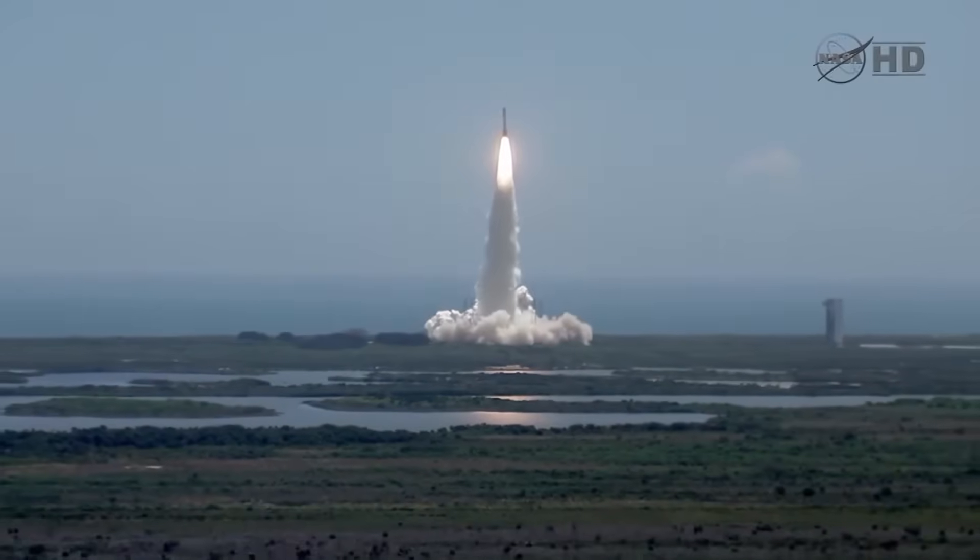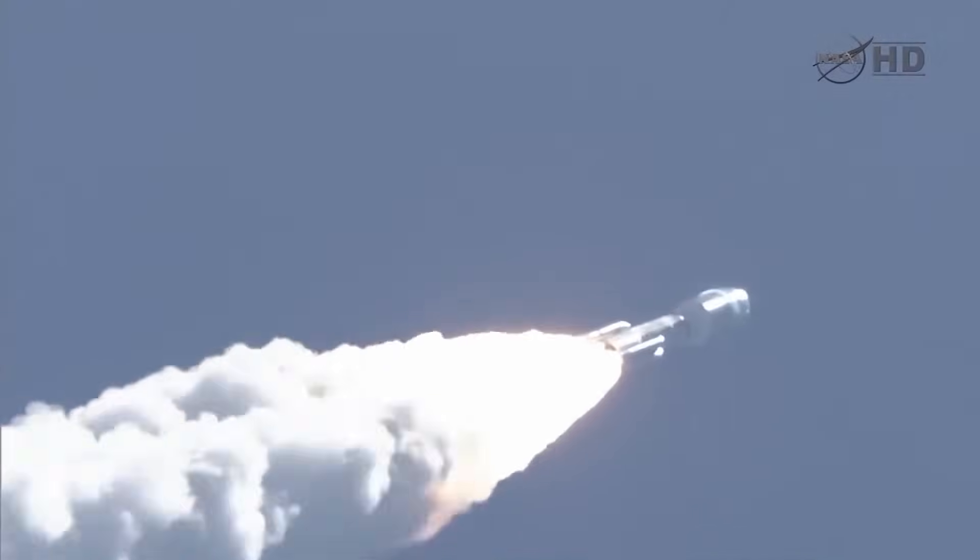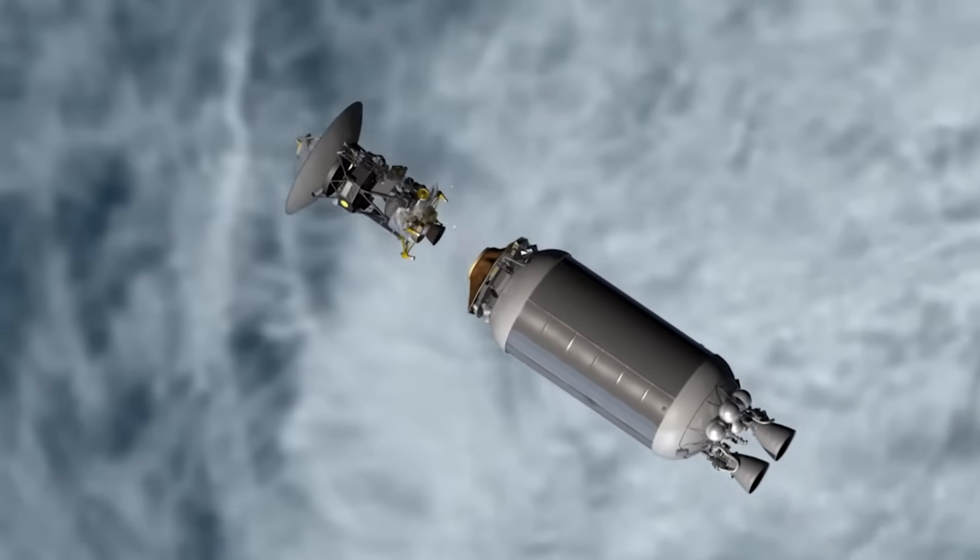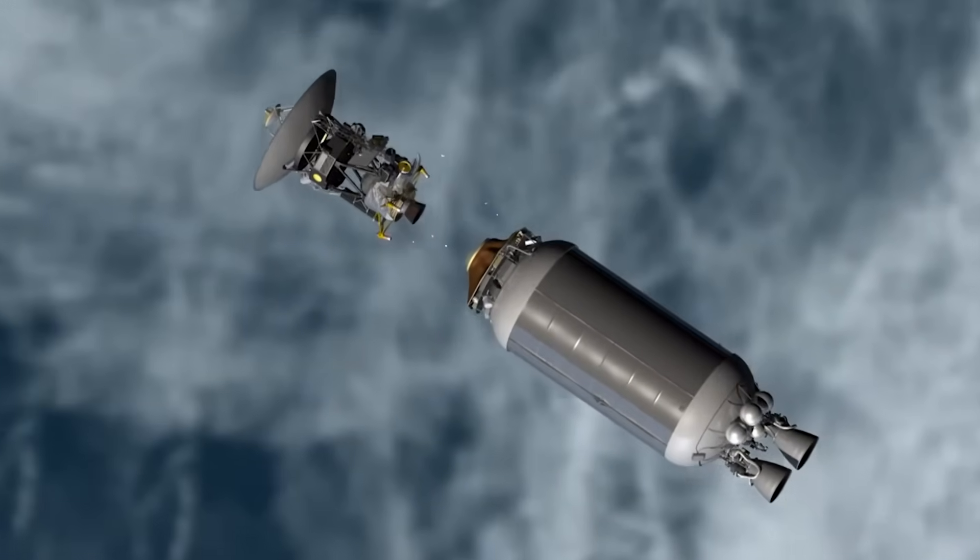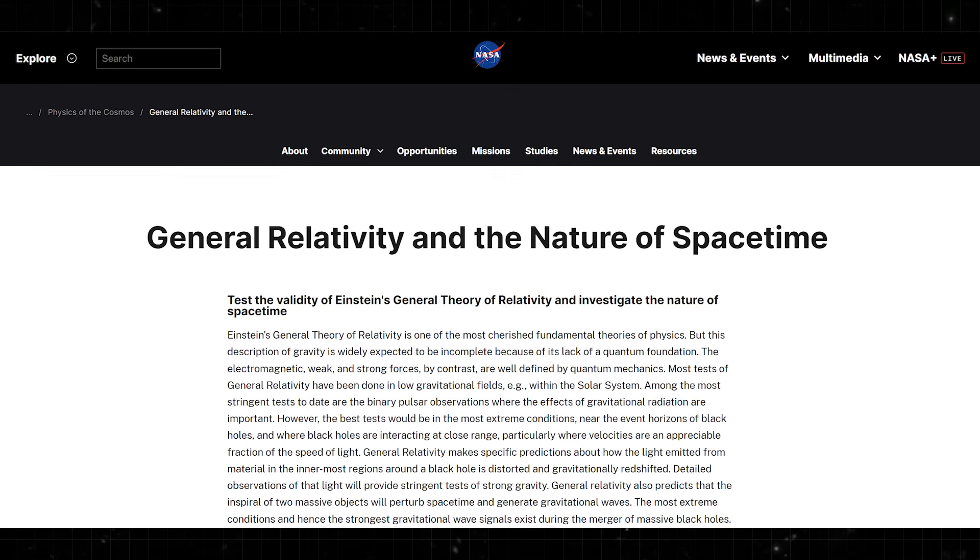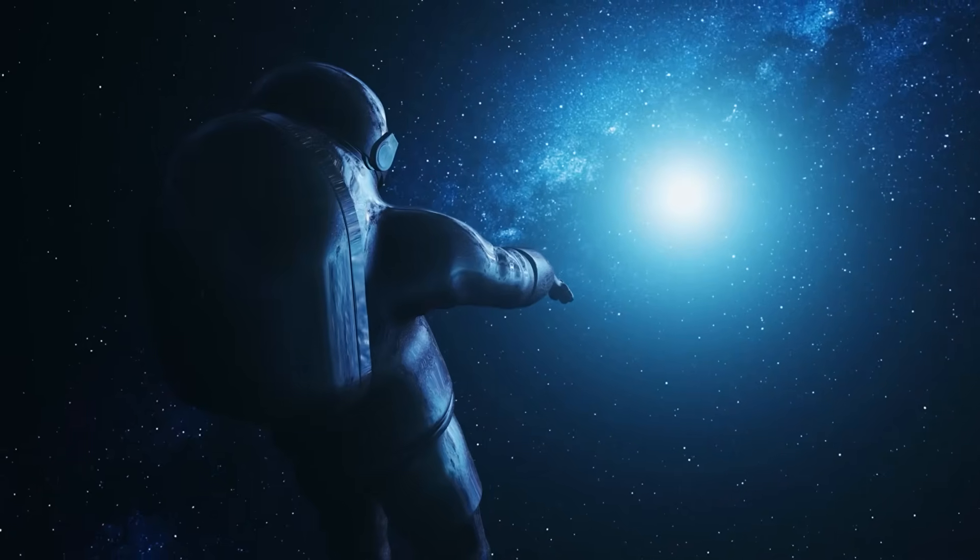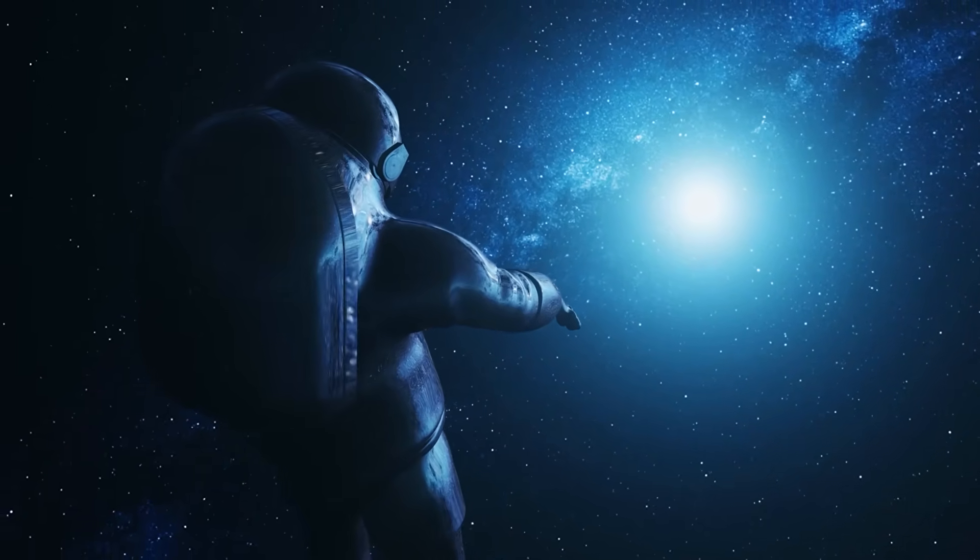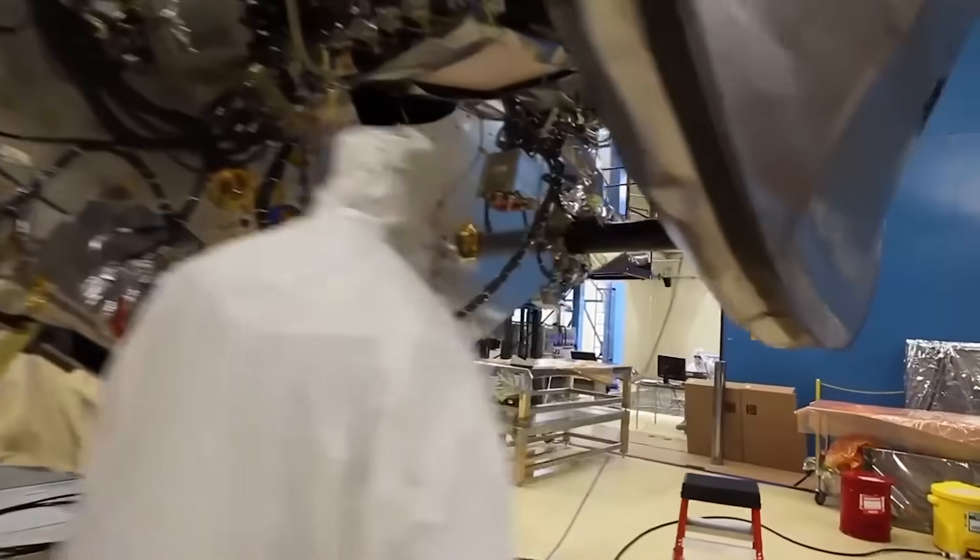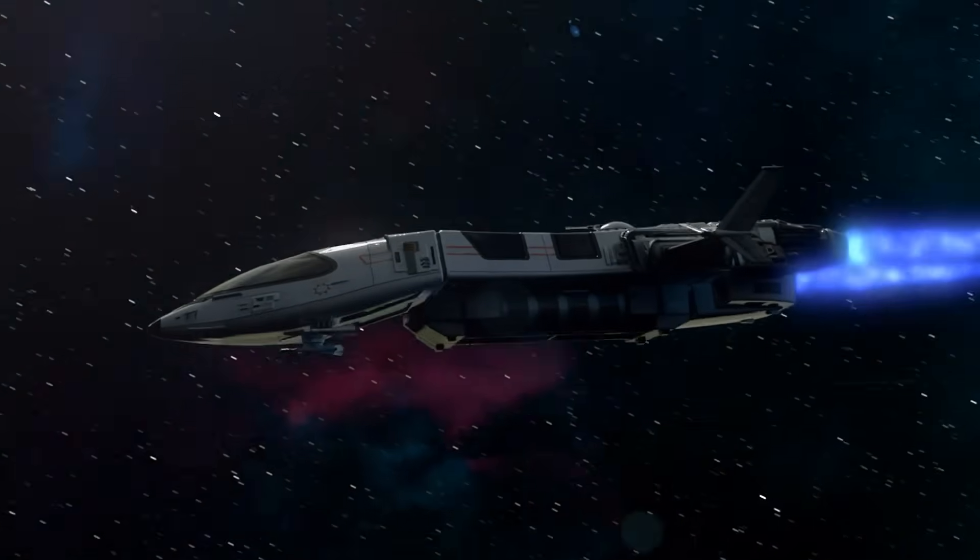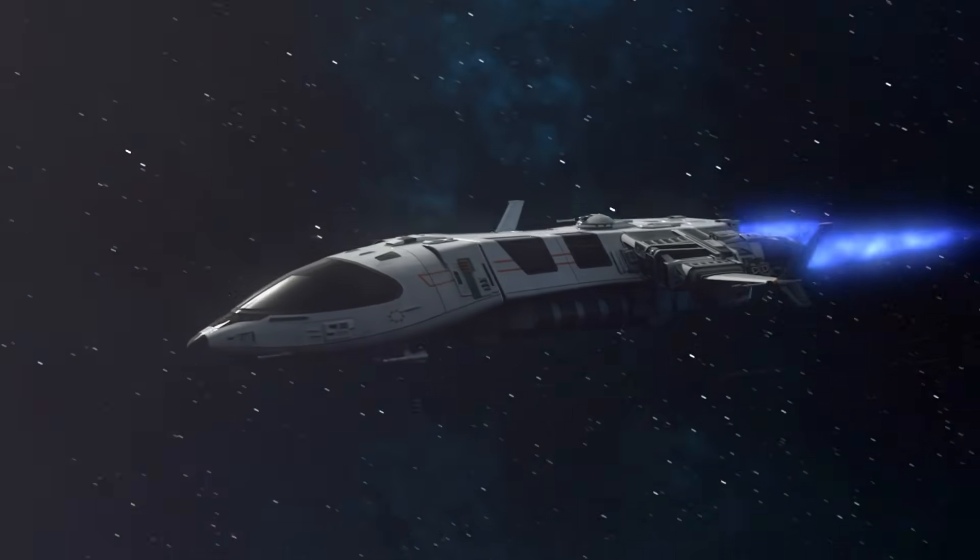For most of the 20th century, interstellar travel was imagined as a straight line. Build a faster rocket, burn more fuel, accelerate longer. But relativity places a hard cap on how fast you can go, and conventional propulsion runs into a wall of diminishing returns. That is why some physicists began to ask a different question. Instead of moving faster through space-time, could we bend space-time itself?